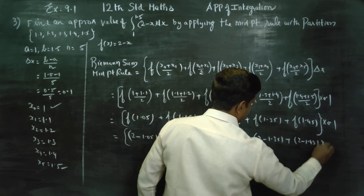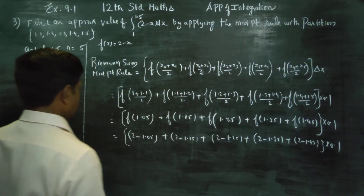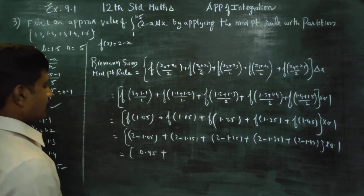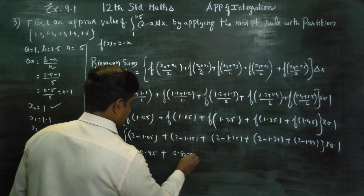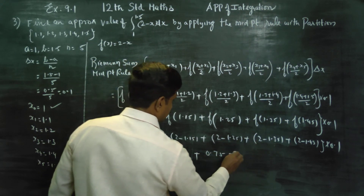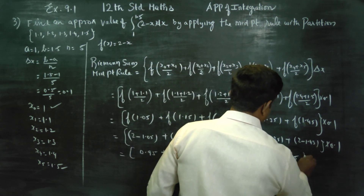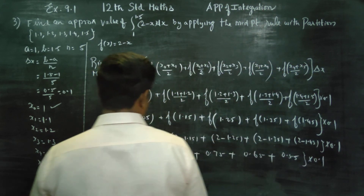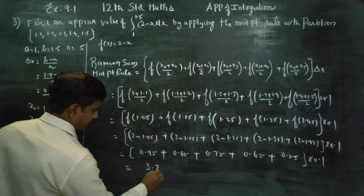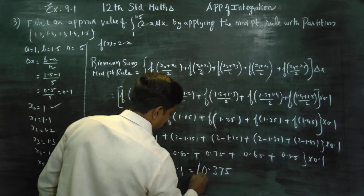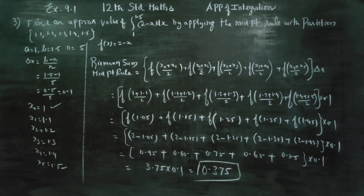Applying f(x) = 2 minus x at each midpoint: 2 minus 1.05 = 0.95, 2 minus 1.15 = 0.85, 2 minus 1.25 = 0.75, 2 minus 1.35 = 0.65, 2 minus 1.45 = 0.55. Adding these gives 3.75, multiplied by 0.1, the final answer is 0.375. This is the Riemann sum for the midpoint rule. Thank you.